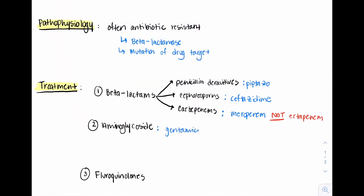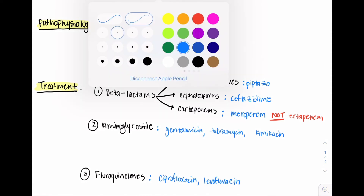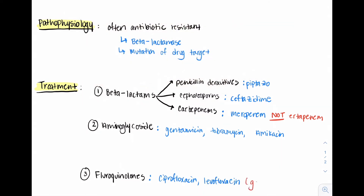Under the category of aminoglycosides, we have gentamicin, tobramycin, and amikacin. In the category of fluoroquinolones, we have ciprofloxacin and levofloxacin. The fluoroquinolones are good oral options for patients that are either clinically well enough to tolerate oral therapy, or patients that require long-term suppressive therapy.